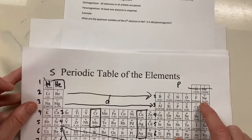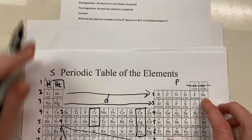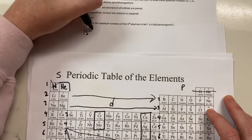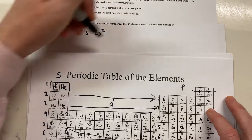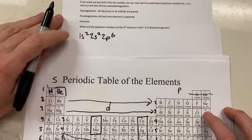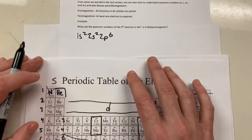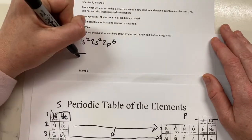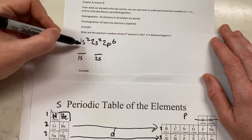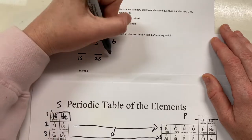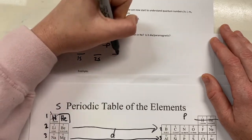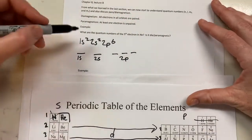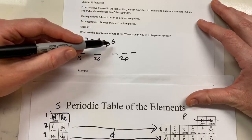So looking at neon — it's right here. The electron configuration of neon, the full electron configuration, would be 1s2, 2s2, 2p6. If we draw this out in a linear fashion, I'd call this my 1s, my 2s — remember each s only has one orbital — and the p has three orbitals, so that'd be my 2p orbital. Each orbital holds two electrons, so in my 1s I have 2, 2s I have 2, and in my 2p I have 6.